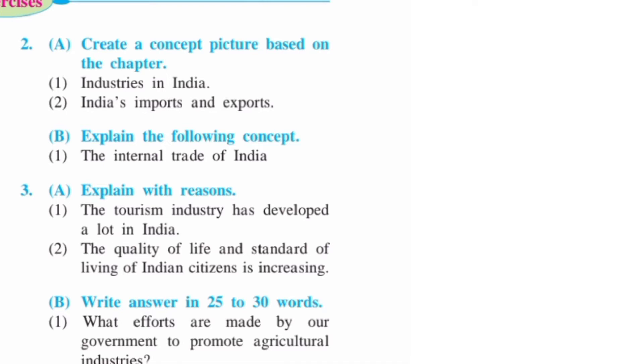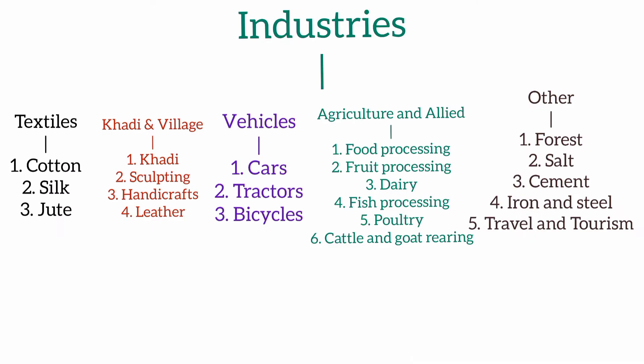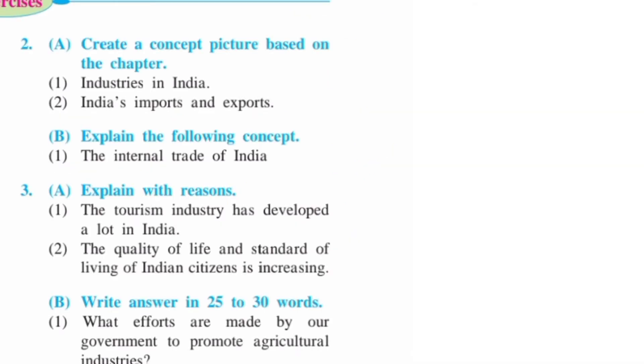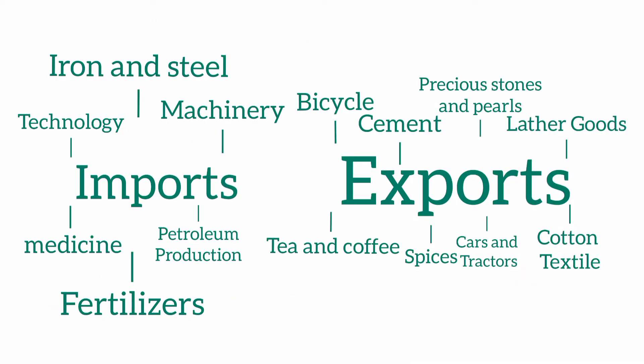Question number 2A: Create a concept picture based on the chapter. First one: Industries in India — make a chart and categorize industries into: Textile, Khadi and Village, Vehicles, Agriculture and Allied, and Others. Write down the key points for each category.